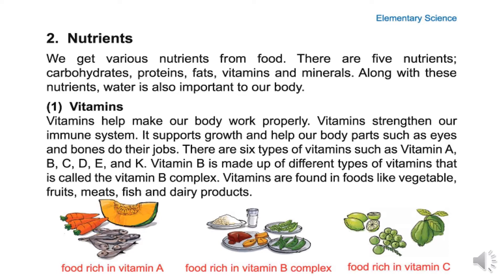Vitamins help make our body work properly. Vitamins strengthen our immune system, support growth, and help our body parts such as eyes and bones do their jobs. There are six types of vitamins: vitamin A, B, C, D, E and K. Vitamin B is made up of different types of vitamins, called the vitamin B complex. Vitamins are found in foods like vegetables, fruits, meat, fish and dairy products.